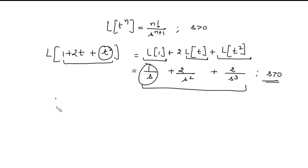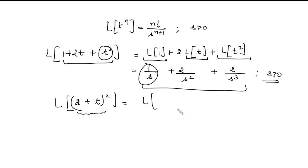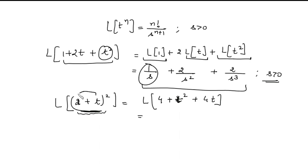Now find the Laplace of (2 plus t) whole squared. We can open this square: it will be 4 plus t squared plus 4t. We cannot apply the formula directly to (2 + t) as a whole; we have to open the square first — a squared plus b squared plus 2ab.